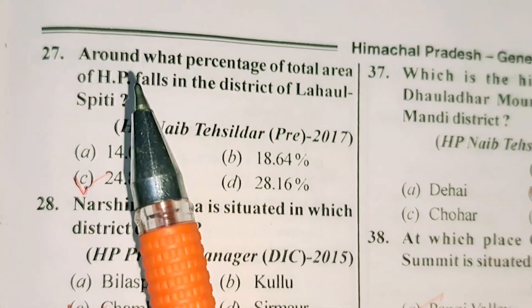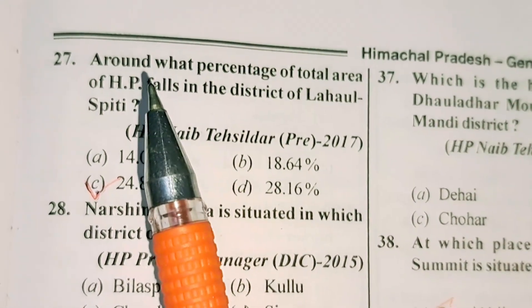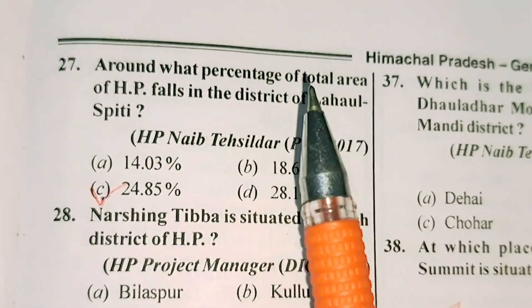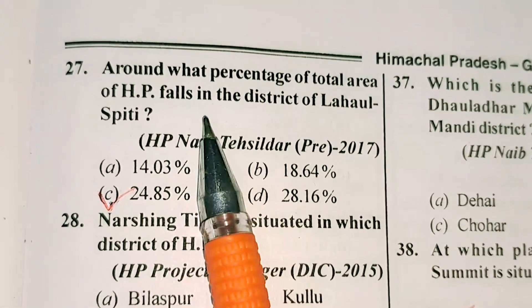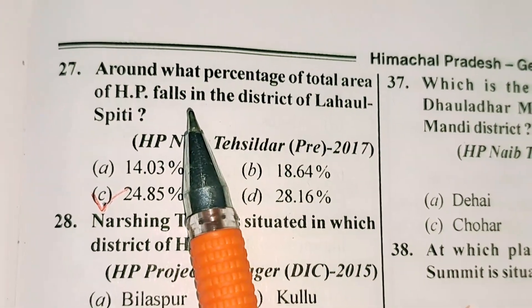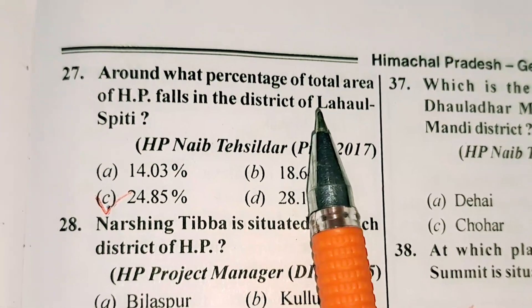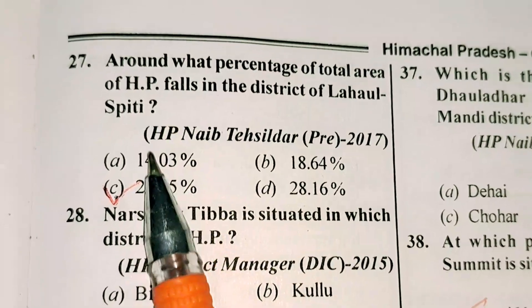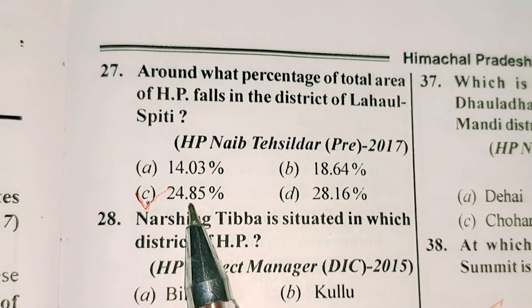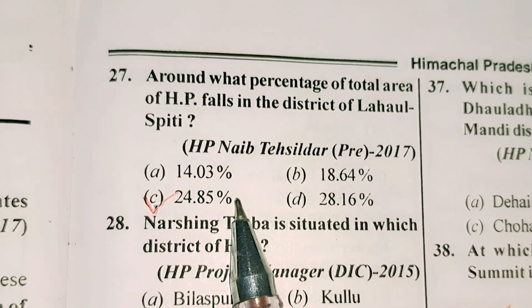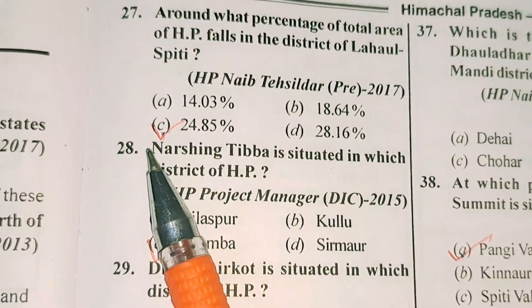Question number 27 is: around what percentage of total area of Himachal Pradesh falls in the district of Lahal Spiti? Option C is correct — 24.85 percent.